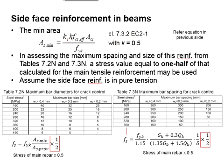As for the spacing and the size of the reinforcement bar, the table 7.2N and 7.3N are to be referred. However, the stress value calculated will have to be multiplied by 0.5.